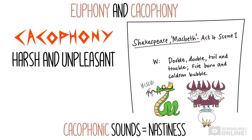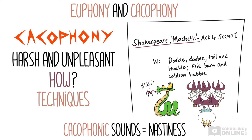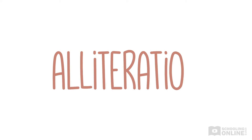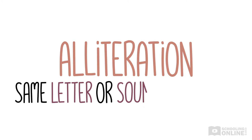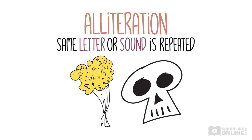So how does a poet make something sound nice or not? The rest of the lesson will go through some techniques that poets use to create euphonic and cacophonic effects. One of the most basic sound techniques is alliteration. This is when the same letter or sound is repeated. Whether alliteration makes the poem euphonic or cacophonic depends on the context.